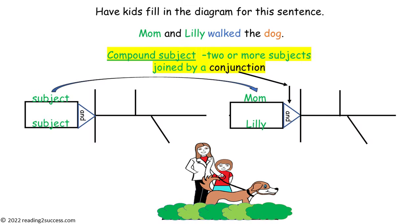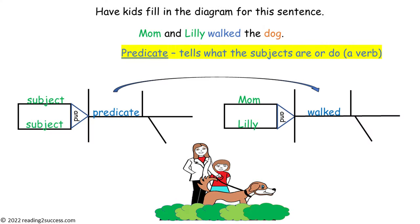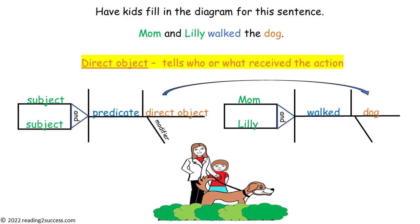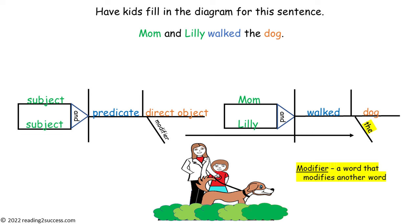Have kids write the compound subject and the conjunction. They would start by writing Mom, then Lily, and then the conjunction and. Next, have kids fill in the predicate, walked, the direct object, dog, and the modifier, the.